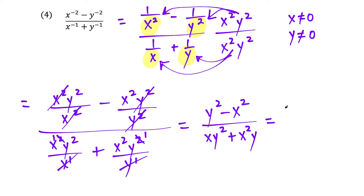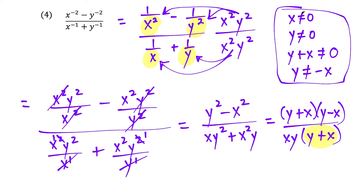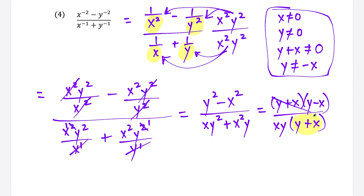Factoring the top as a difference of two squares gives y plus x times y minus x. On the bottom, we factor out x y, leaving y plus x. We have a new restriction: y plus x cannot equal zero, meaning y is not allowed to equal negative x. So the y plus x factors cancel, and this all simplifies to y minus x over x y. This is our simplified expression, equivalent to the original for all x and y not equal to zero, and where y does not equal negative x.